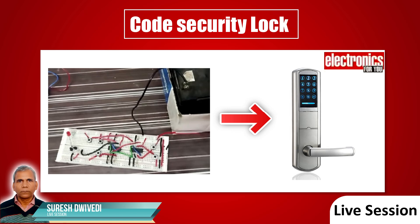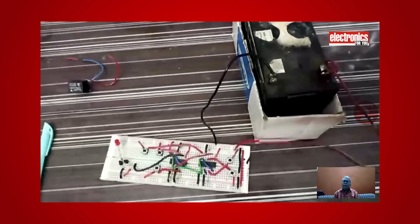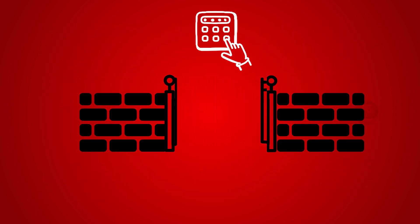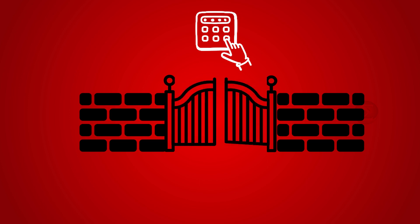Hello friends. Today's project is Code Security Lock. Using this simple circuit, you can secure your house by installing a code lock at the main gate. The unique code of lock is only known to you. The gate will open only if you press the correct code. Otherwise, the circuit will reset and the gate will not open.